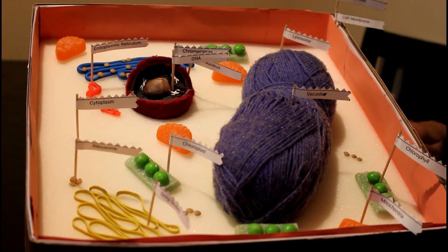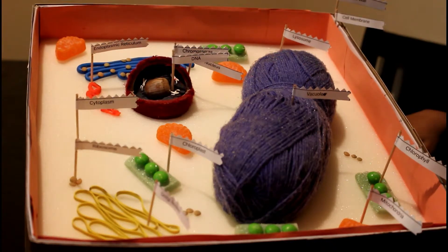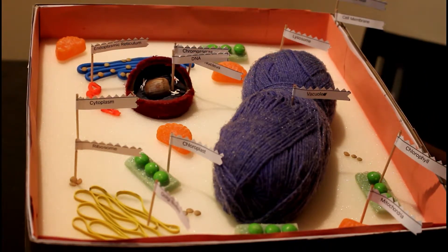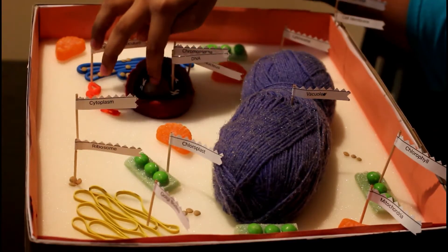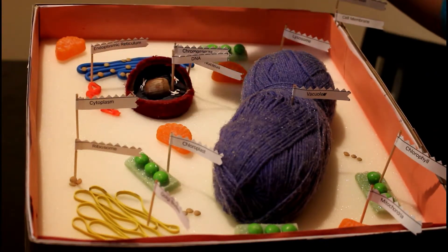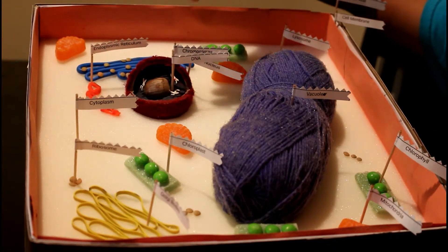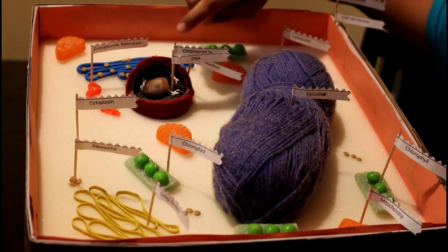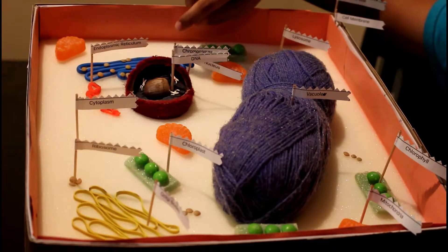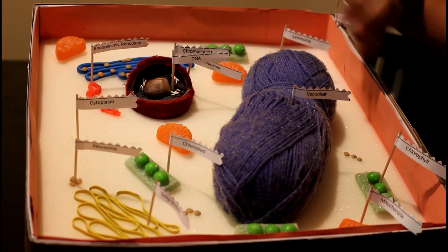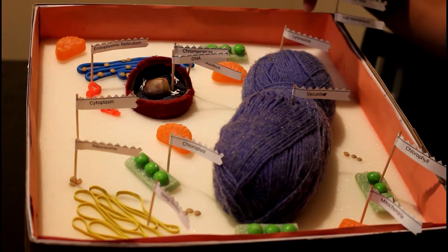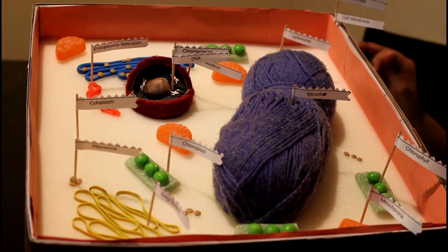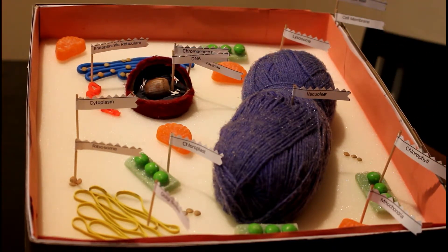Inside the nucleus is a nucleolus, and inside the nucleolus is DNA. There's also little white X's and they're called chromosomes. They're made of DNA and they come in forms of a double helix. DNA stands for deoxyribonucleic acid.